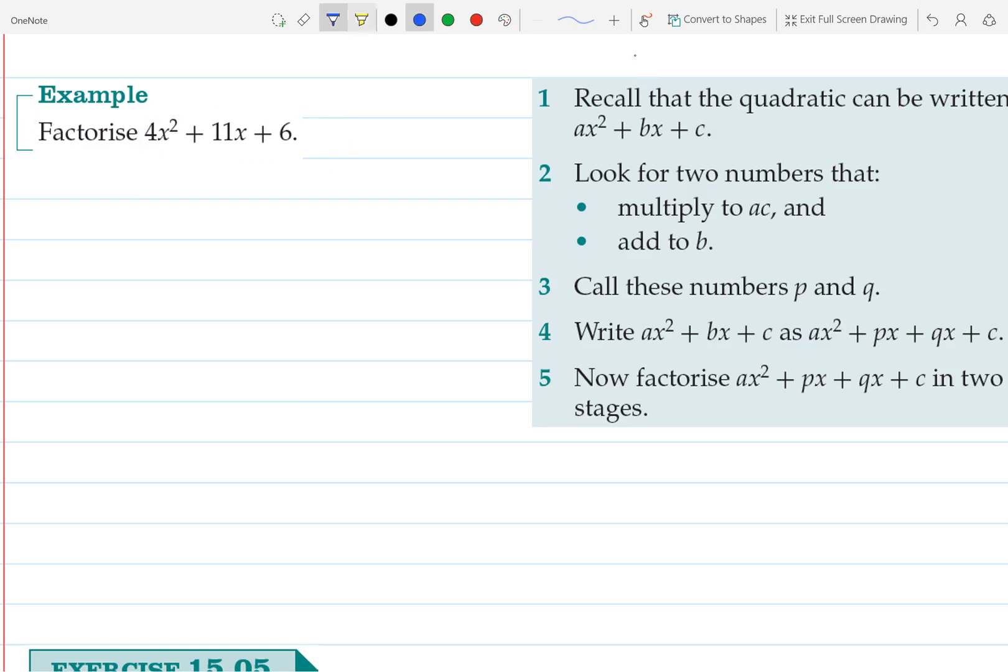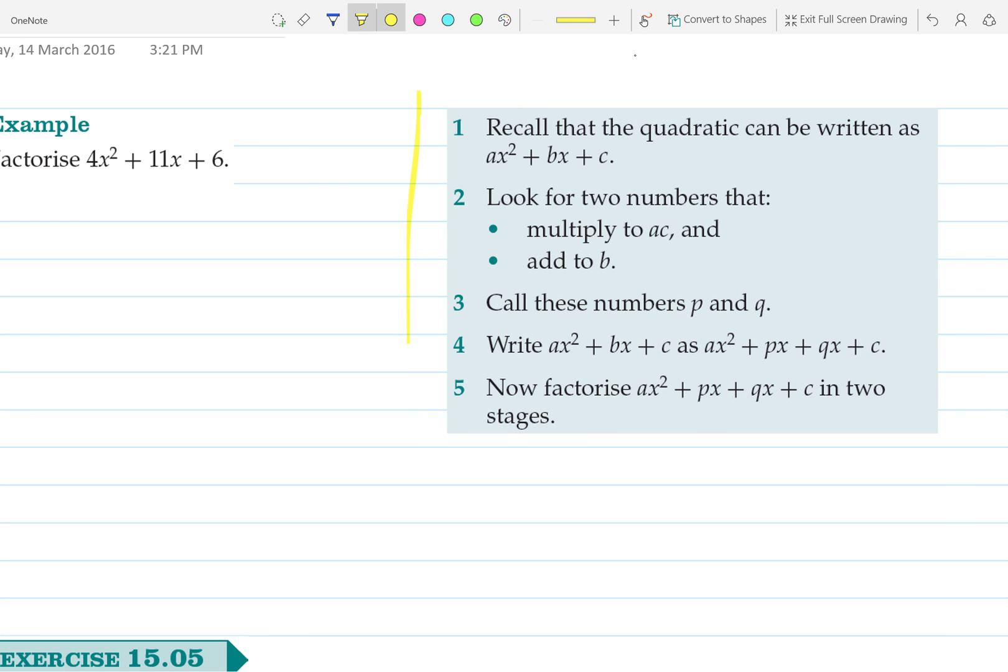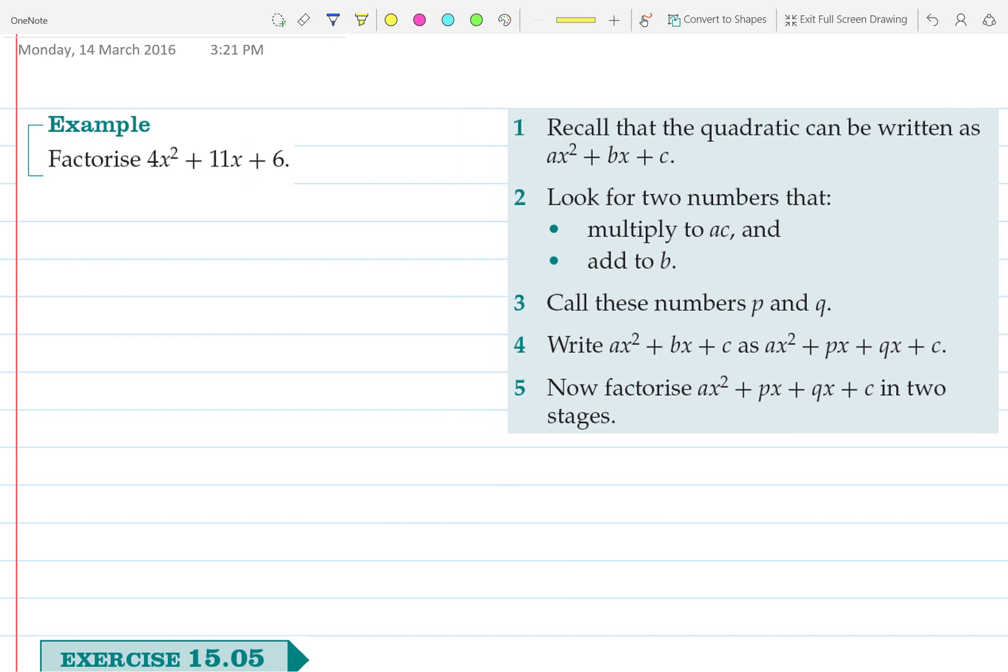I'll let you read this method at your own time, you can pause and read it if you want, but I'm going to go through this example while reading it. It starts by saying recall that a quadratic can be written as ax² + bx + c. So that simply means for this example that a would be 4, b would be 11, and c would be 6.